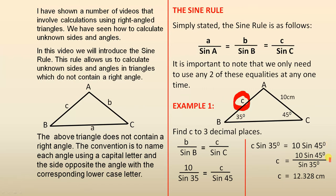Divide both sides by sine 35 to get that line. And put this information into your calculator. This gives us c equals 12.328 cm, correct to three decimal places.